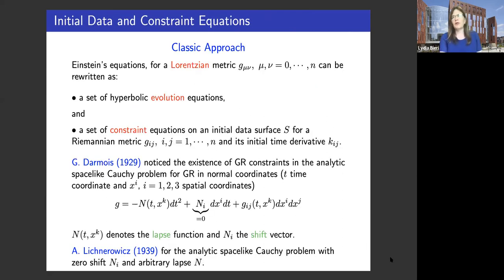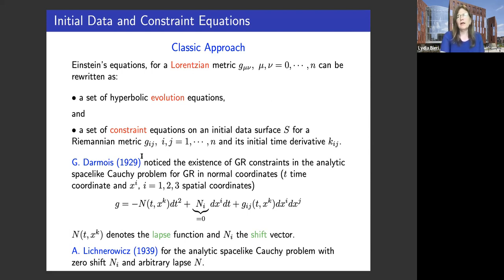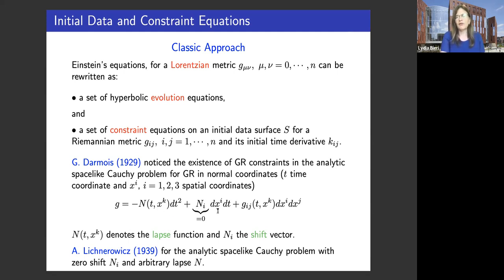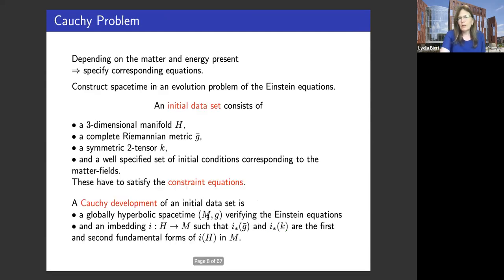The Einstein equations themselves decouple into a set of evolution equations, which we can put into hyperbolic form, and a set of constraint equations. Going back to Darmois in a very special circumstance — namely for the analytic case — he found that the initial data you give needs to fulfill part of the Einstein equations called the constraints. You cannot just give certain types of data; this data has to fulfill one portion of the Einstein equations, which are the constraints. The first function here in front of the time component is what you call the lapse function, and then you have a shift vector.